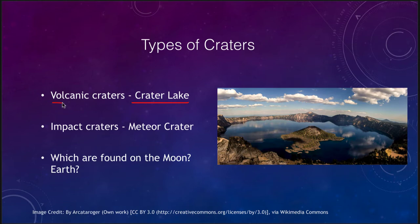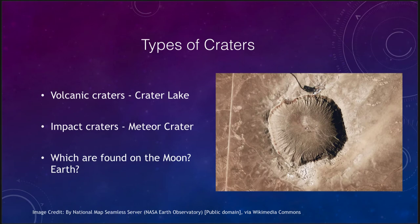So there are volcanic craters that you can get as well, and you can also get impact craters such as the Meteor Crater in Arizona. We can see that here — it looks a lot like many of the impacts that we would get on the moon. You can see how it's got the edge around it and it's been hollowed out by a very massive impact.